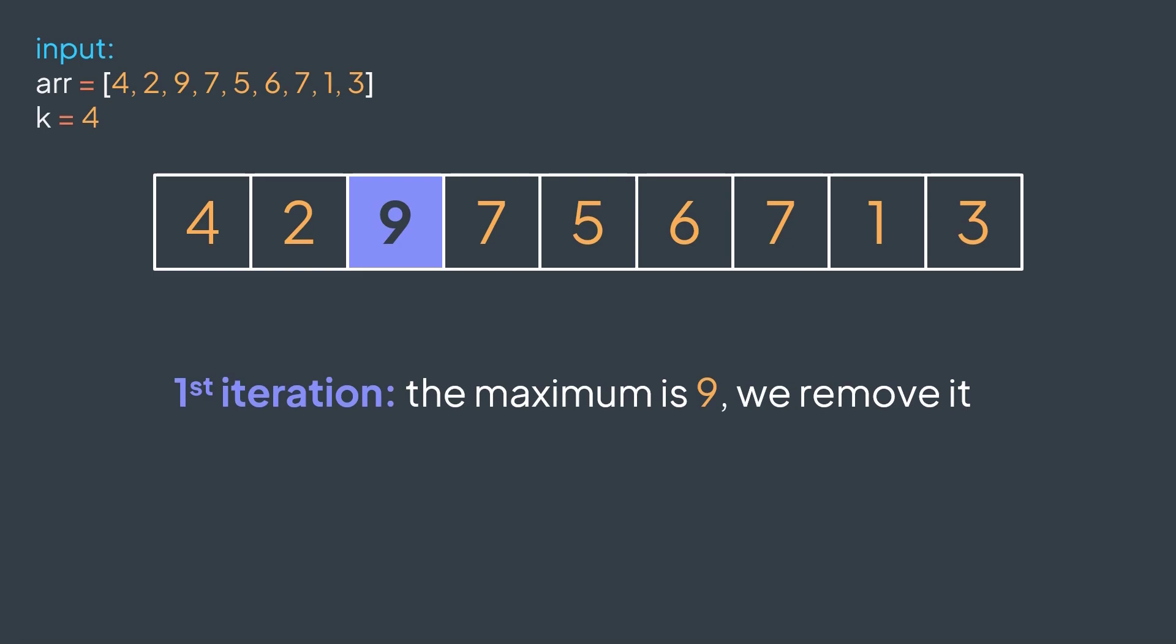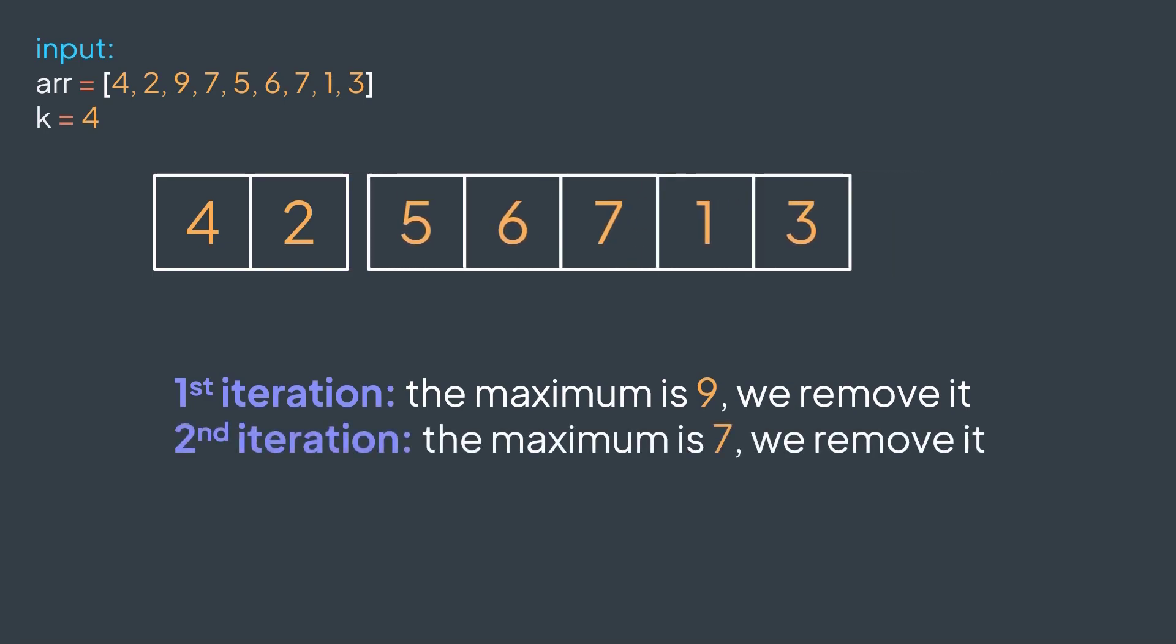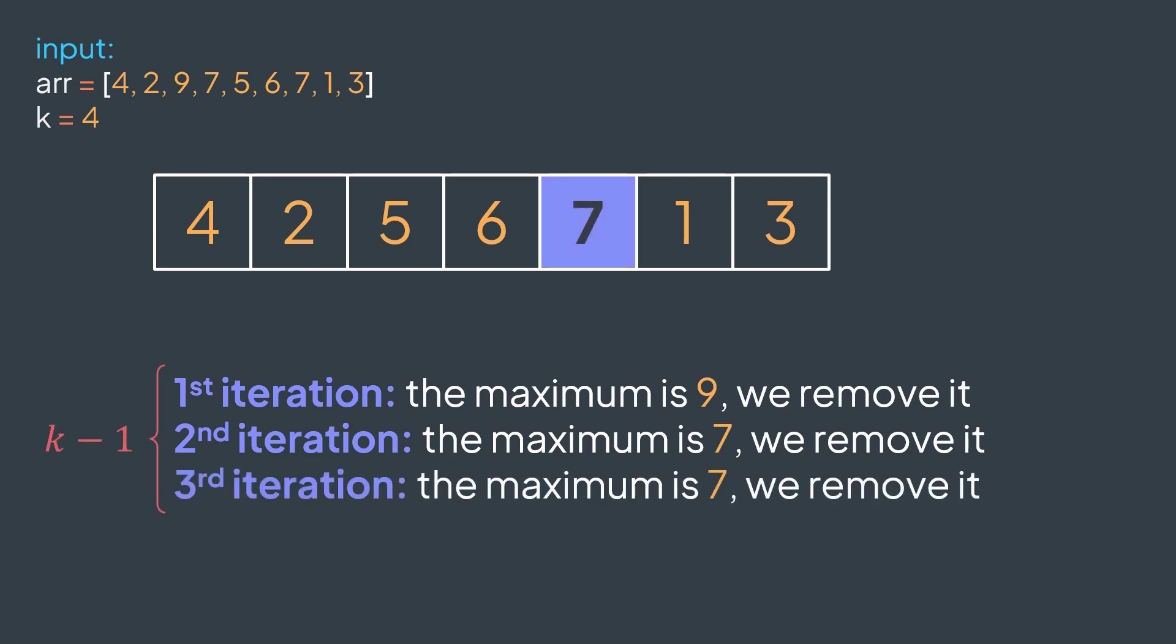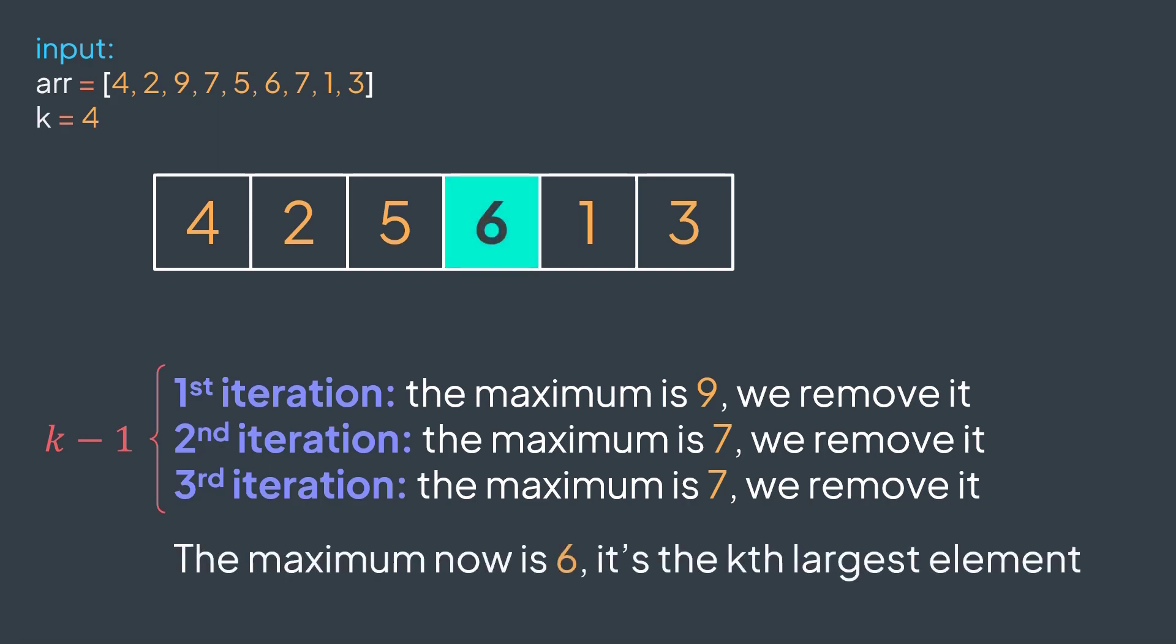First iteration, max is 9, we remove it. Second iteration, max is 7, we remove it. Third iteration, max is 7, we remove it. Now that we finish the three iterations, the maximum in remaining elements is the kth largest element of the original array. It's 6 here, we return it.